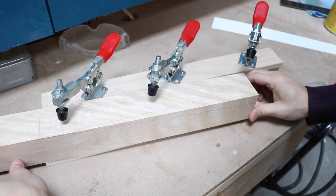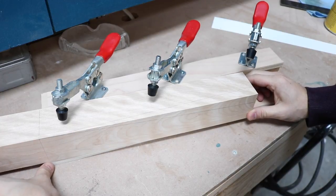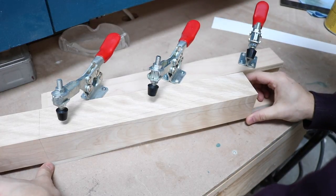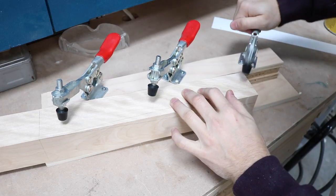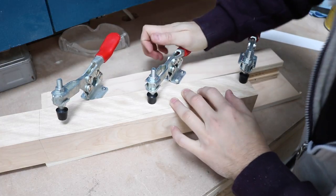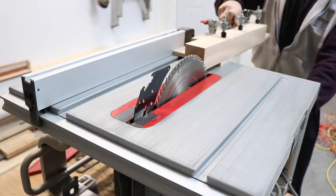The front legs are two and a quarter inch square stock that I'll be adding a taper on two sides. The taper starts about three inches from the top on the two inner sides of the legs.